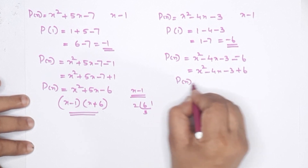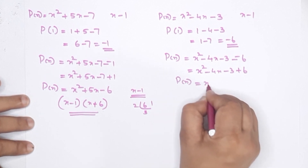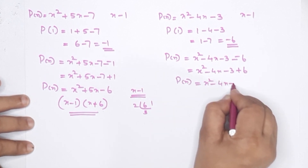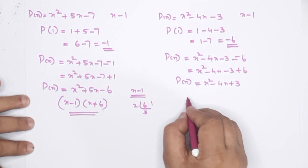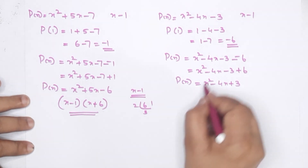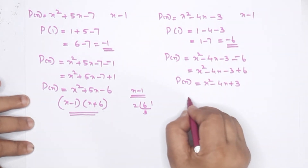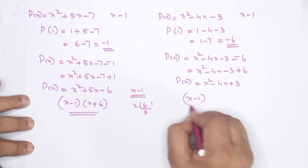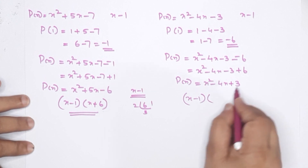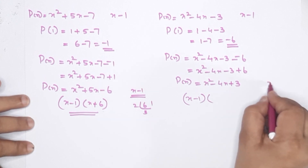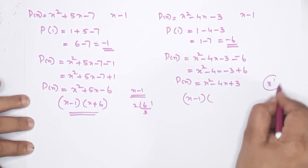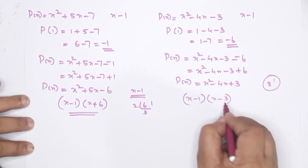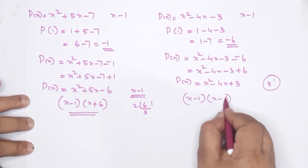So P of x equals x squared minus 4x plus 3. This is our polynomial with x minus 1 as one factor. The next factor: 3 equals 3 times 1, so the other factor is x minus 3. The factors are x minus 1 and x minus 3.